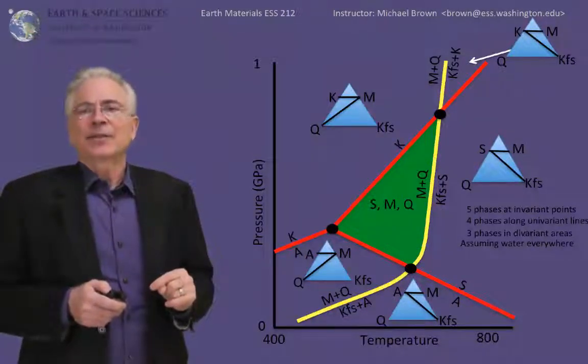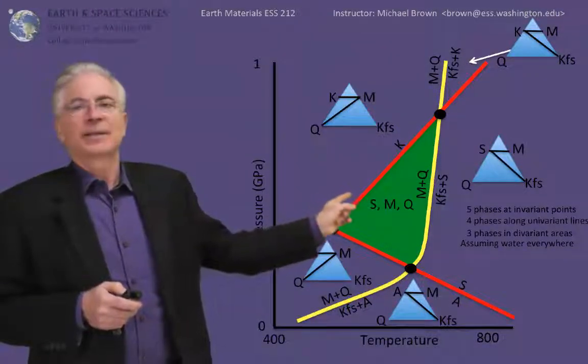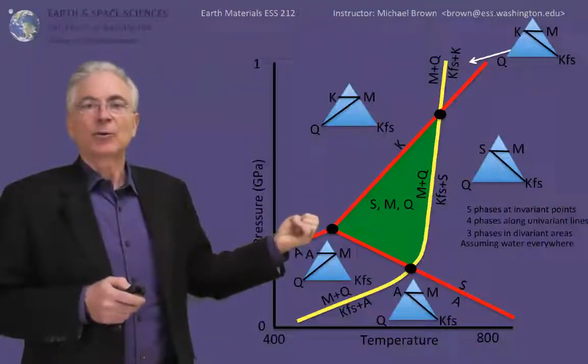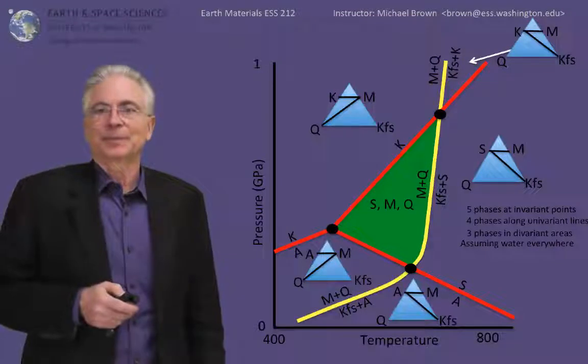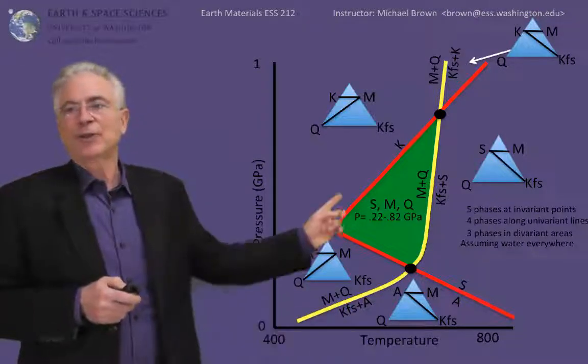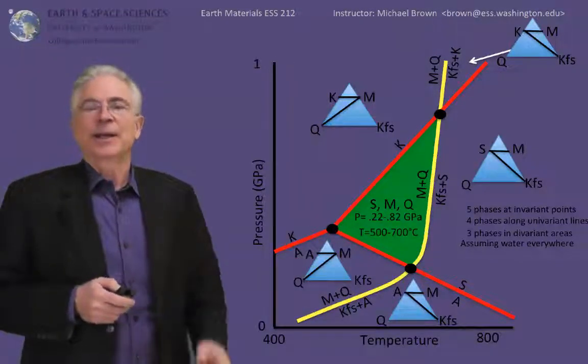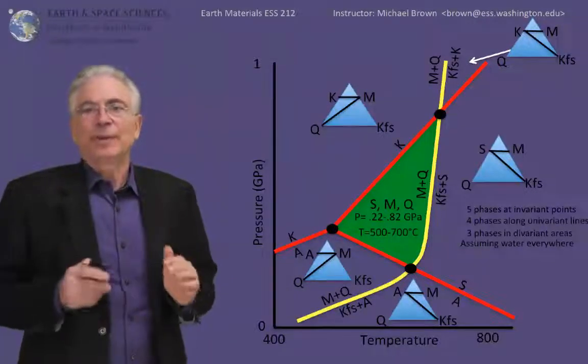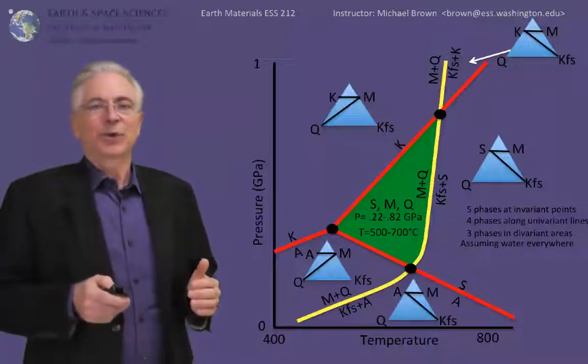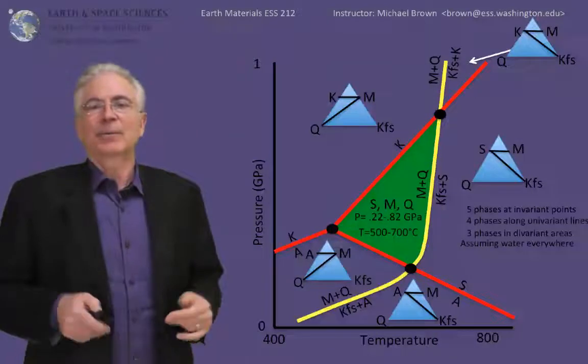Now, before ending this video, I want to examine what happens if we found a rock that has sillimanite, muscovite, and quartz. And the stability region for those three minerals being in equilibrium with each other is highlighted in green. That highlighted region encompasses a pressure range from 0.22 to 0.82 GPa and a temperature range from 500 to 700 degrees C. Thus, finding a rock with those three minerals in it tells you that the temperature-pressure regime had to lie within those bounds. This is great. This is how metamorphic assemblages tell you something about pressure and temperature.